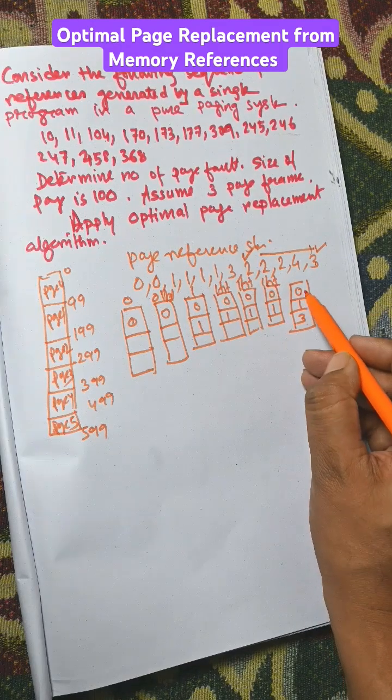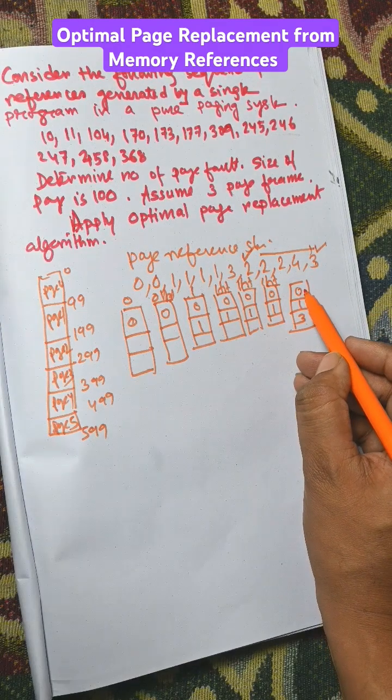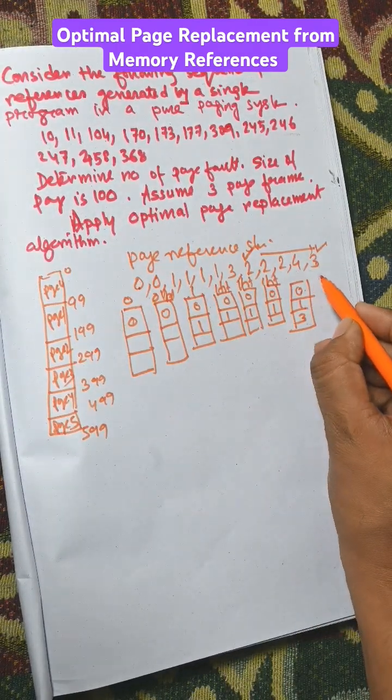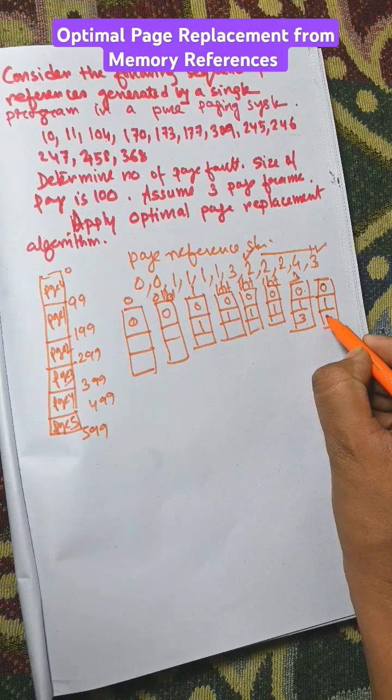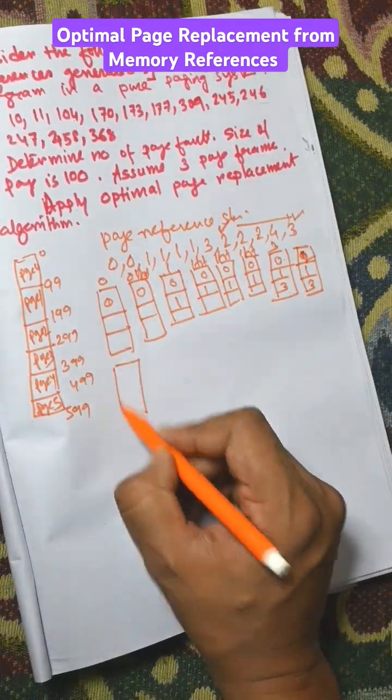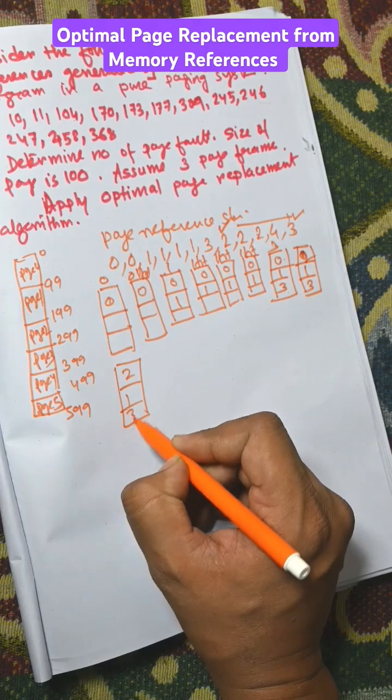Zero arrived first, so zero will be replaced by 2. Now we have 2, 1, 3. And now 2 is available, that is also a hit.